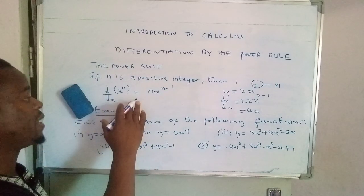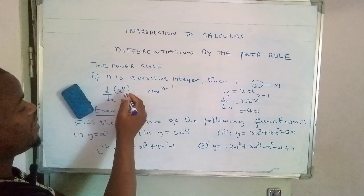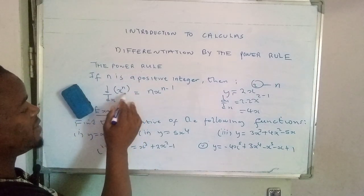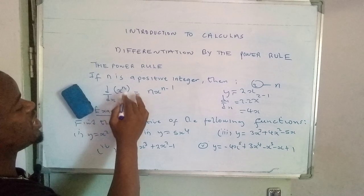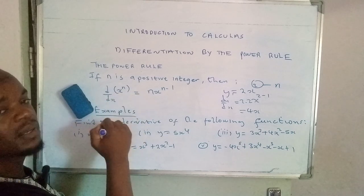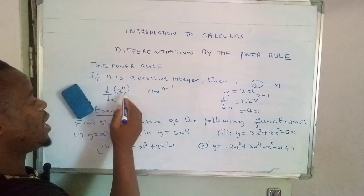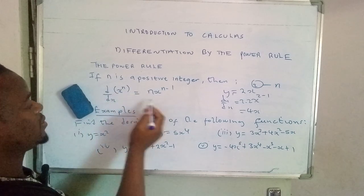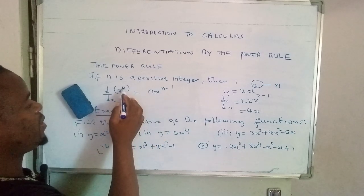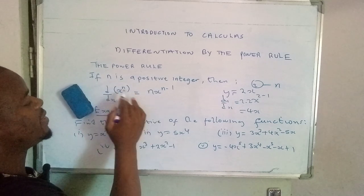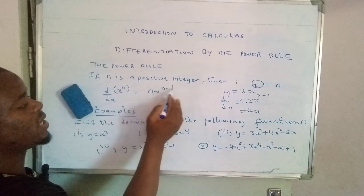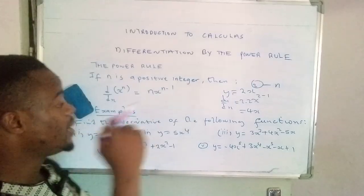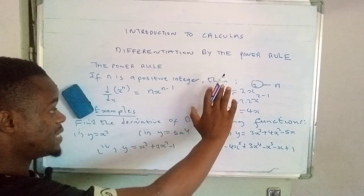So that's the rule we have applied — the power rule. The derivative of this function brings us to this result: the power will drop and then we subtract 1 from the power. That is it.